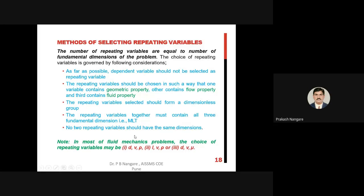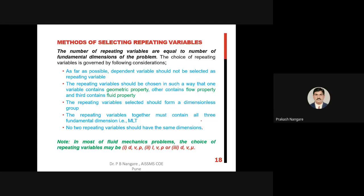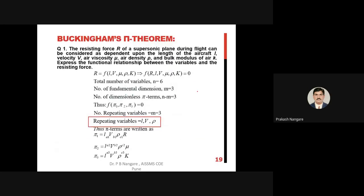The choices for repeating variables are: either b, v, rho; or l, v, rho; or d, v, mu. The first property represents geometry, the second represents flow, and the third is the fluid property. Let us now see one example so that you can understand all the steps and how this method is applied.